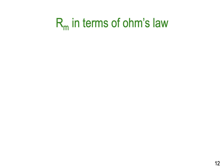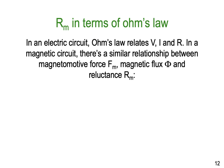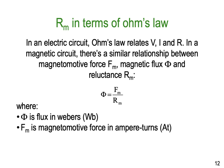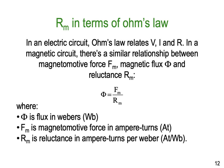Rm in terms of Ohm's law: because we said right at the beginning there was this analogy between the two. In an electric circuit, Ohm's law relates volts, current, and resistance — I equals V on R. In a magnetic circuit there's a similar relationship between magnetomotive force Fm, magnetic flux phi, and reluctance Rm. Fm represents voltage, flux represents current, and reluctance is analogous to resistance. So our formula is: phi equals Fm on Rm. Where phi is flux in Webers, Fm is magnetomotive force in amp turns, and Rm is reluctance in amp turns per Weber.